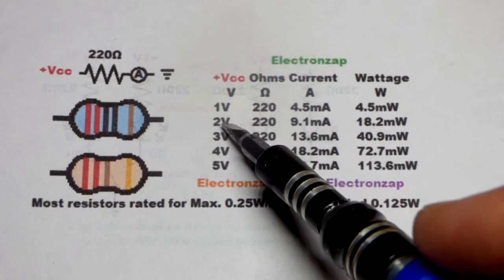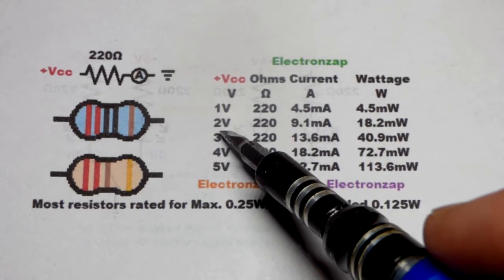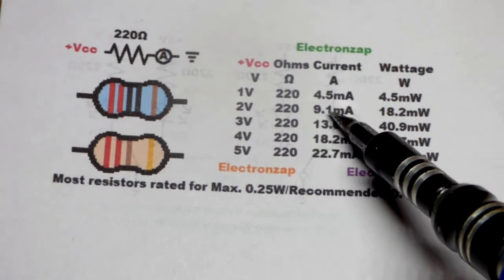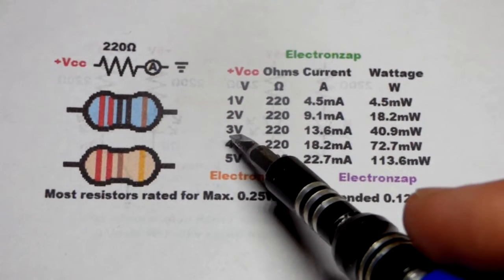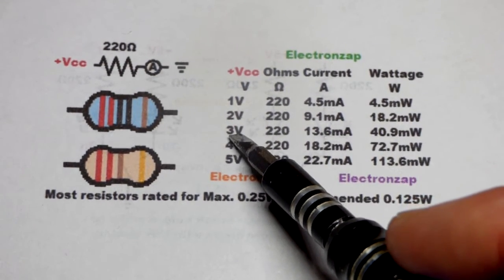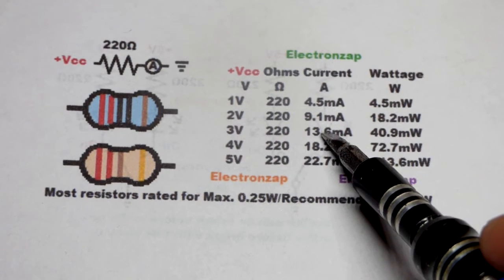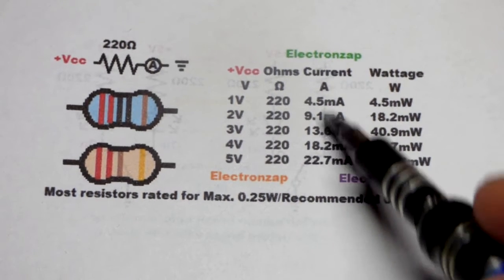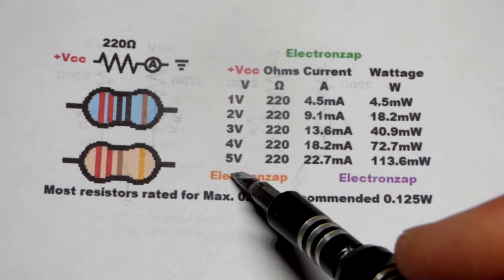So if we double the voltage, put 2 volts across it instead of 1 volt, we'll get twice the current. There you can see about 9.1 approximately. 3 times the voltage across a resistor will give you 3 times the current. So that is linear right there.